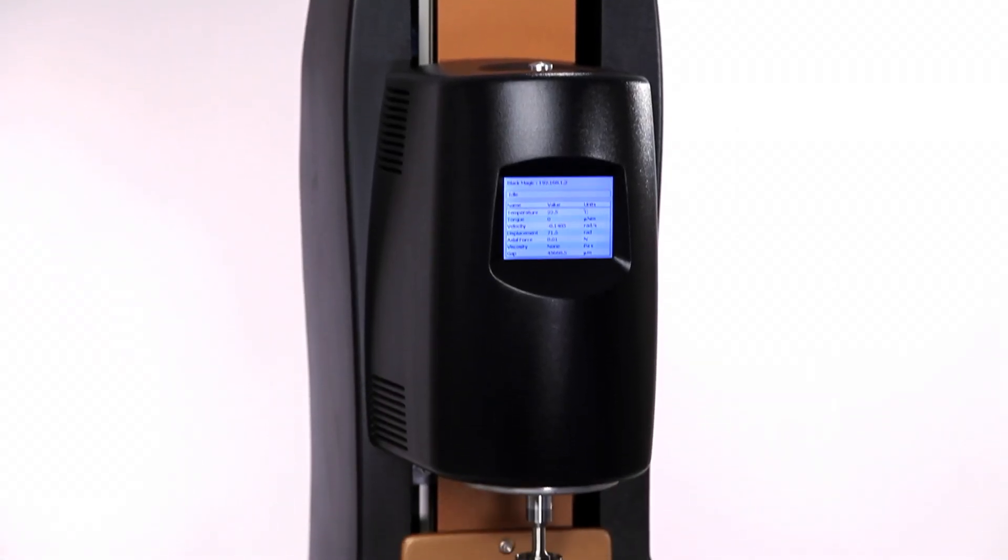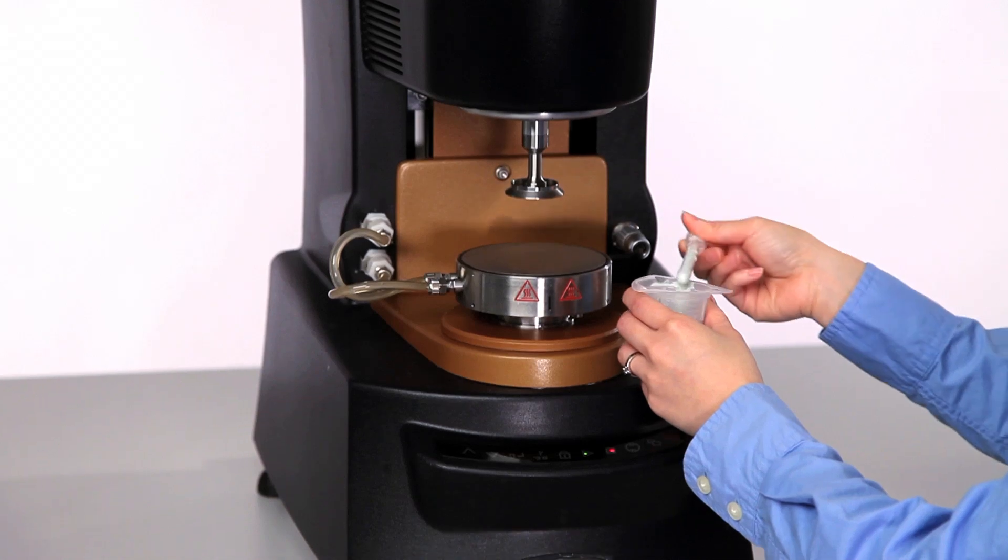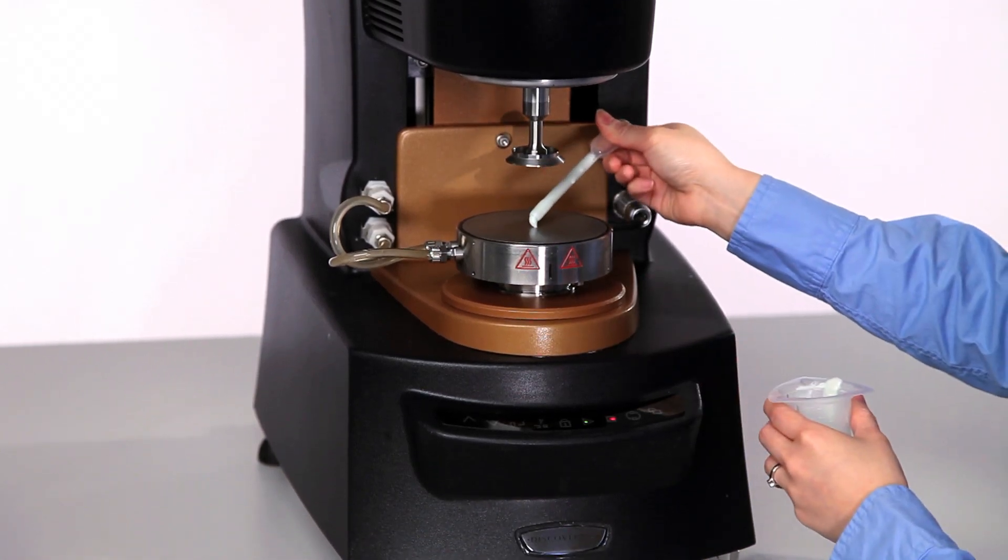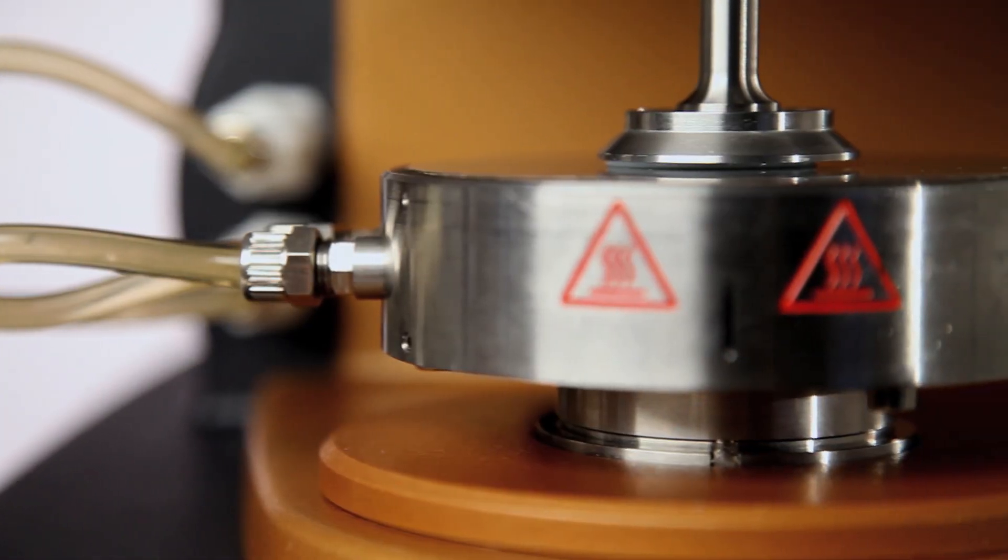When loading many fluids or soft solids it is often hard to judge the appropriate amount needed to achieve a correct fill under the geometry. Many times too much sample is used and sample trimming is required. But what if there's not enough sample?